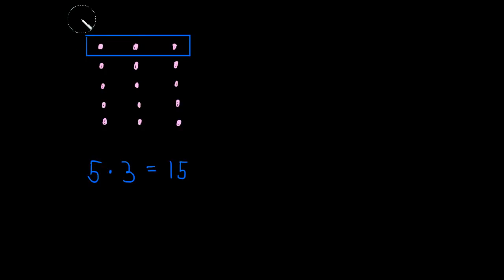Others of you might look at it a little bit differently. Instead of seeing five groups of three, maybe you see three groups of five. So here's a group of five, and there's three of those, so that's three times five. Which still gives us 15 total dots on screen.